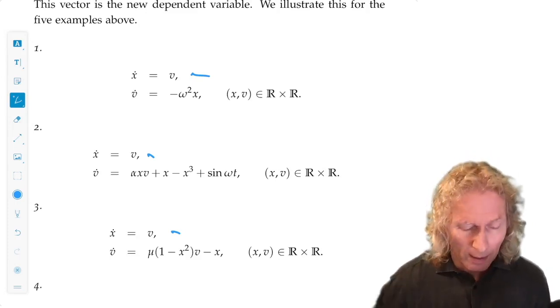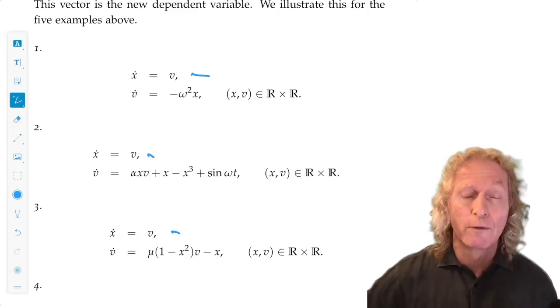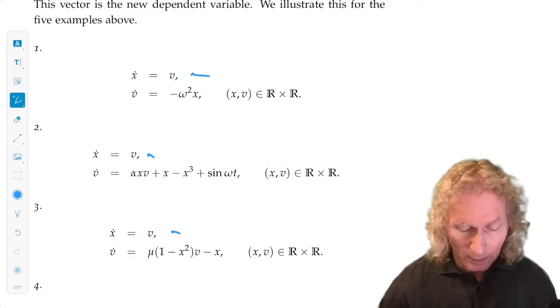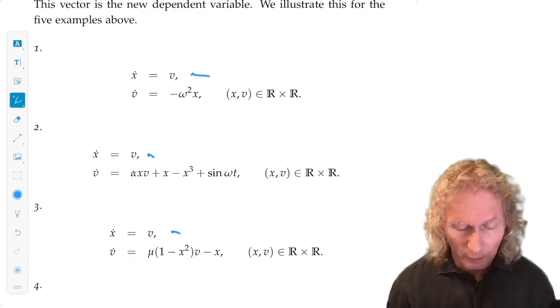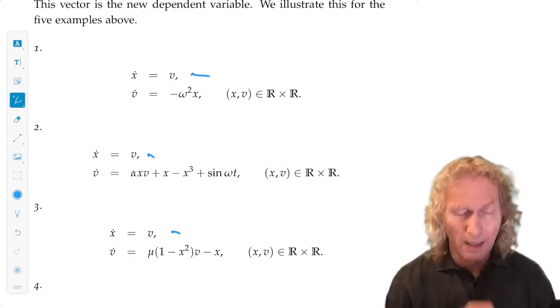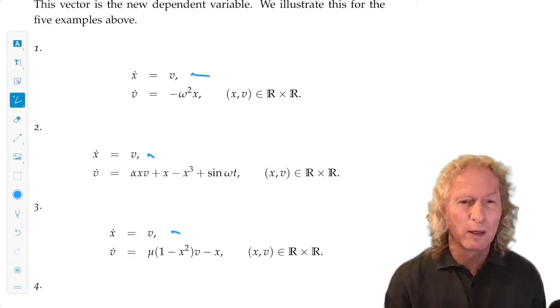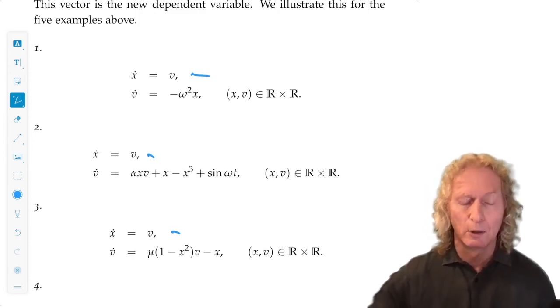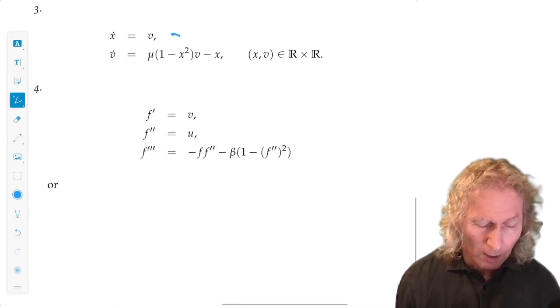And we have first order vector ODEs, where the vector is, in this case, xv. I don't know what they are in particular, so I just say x is a real number, v is a real number. In specific applications, they may be something else, but I'll look at that later on.